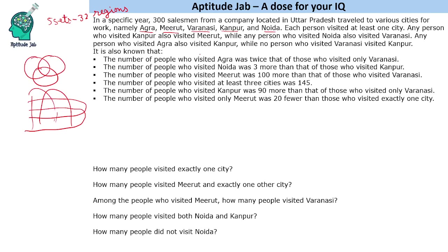For example, it says that no person who visited Varanasi visited Kanpur, so we cannot have people visiting all 5 cities. We will find the ways in which a person can visit 1 city, 2 cities, 3 cities, and 4 cities. If a person visited Kanpur, they also had to visit Meerut, so only Kanpur alone is not possible. Similarly, only Noida alone is not possible because Noida requires visiting Varanasi.